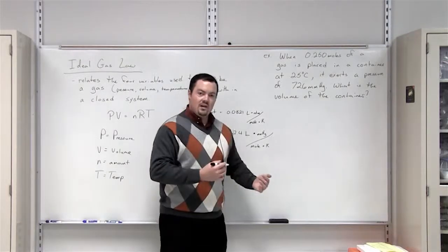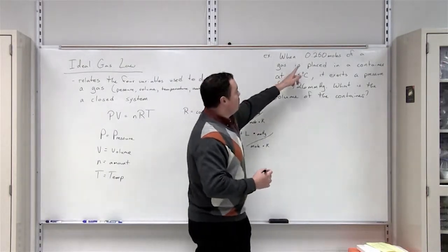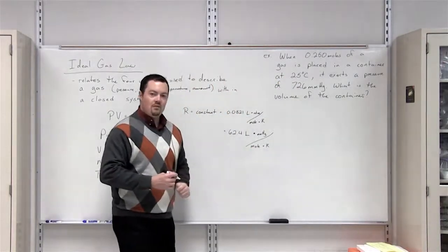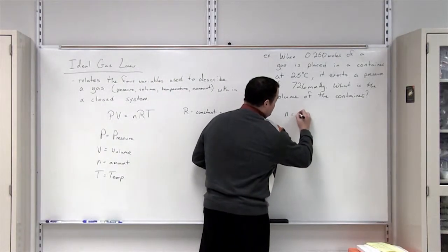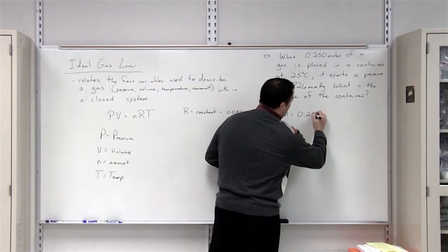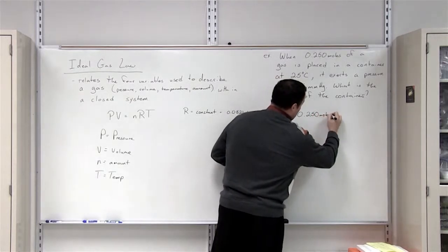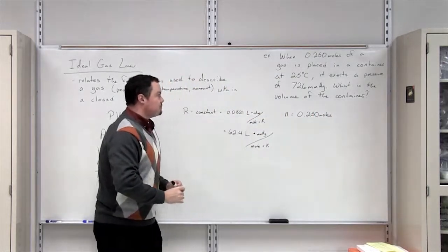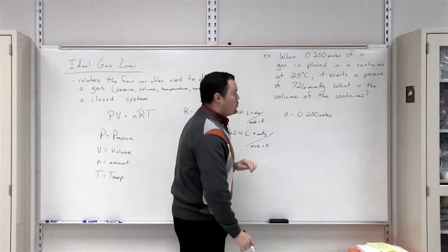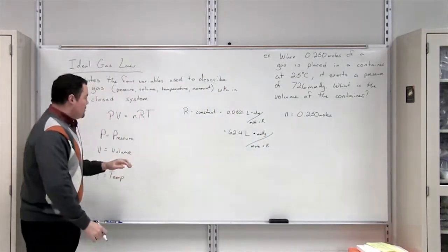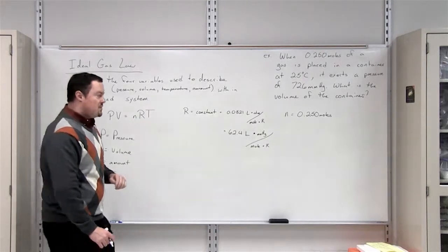We can solve this problem using the ideal gas law. Look at the variables that are given to us in the problem. First of all, it tells us the amount of gas present. So N is equal to 0.250 moles. Then it tells us that we put this gas in a container at 25 degrees Celsius. So that's the second variable that we're given is temperature.